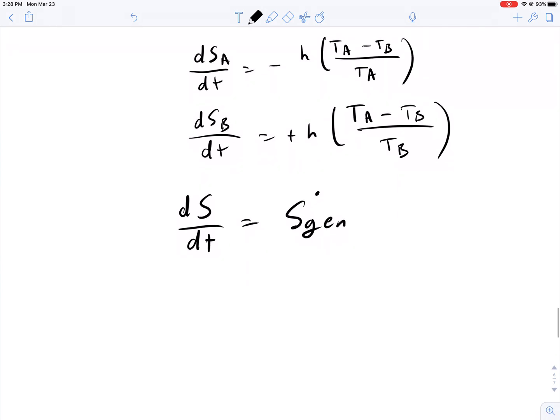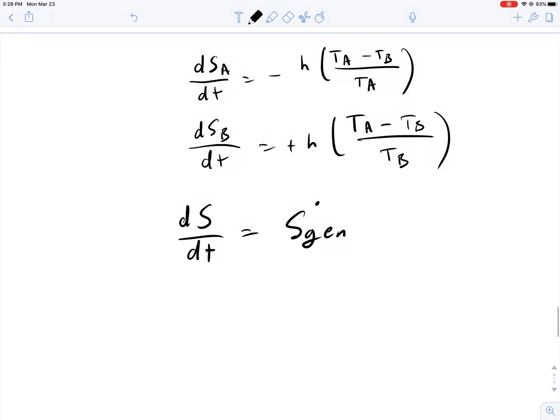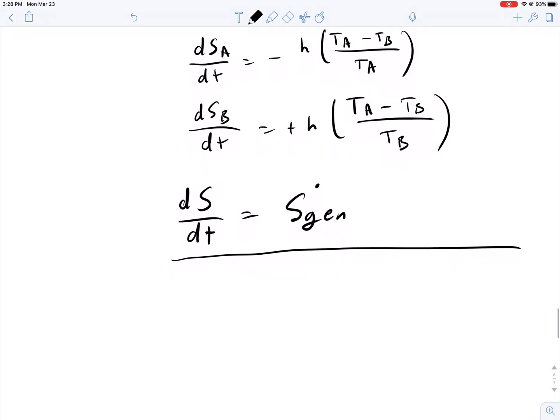This gradient inside can lead to SGEN. This is an interesting problem that lets us understand how these equations combine to tell us how entropy is generated in this system.